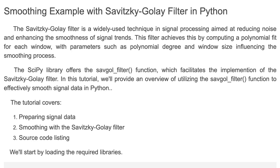The SciPy library offers the Savitzky-Golay filter function which facilitates the implementation of the filter. In this tutorial I'll briefly provide an overview of utilizing the Savgol filter function to smooth signal data in Python. This tutorial covers preparing signal data, smoothing with the Savitzky-Golay filter, and source code listing.